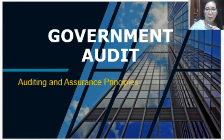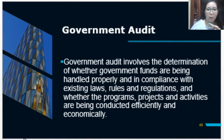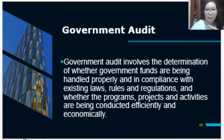For this next video lecture, our topic is about the next types of audit. This time we will be discussing government audit. Government audit involves the determination of whether government funds are being handled properly and in compliance with existing laws, rules, and regulations, and whether their programs, projects, and activities are being conducted efficiently and economically. Basically, we are talking about the audit of government agencies, which are done by COA, our Commission on Audit.